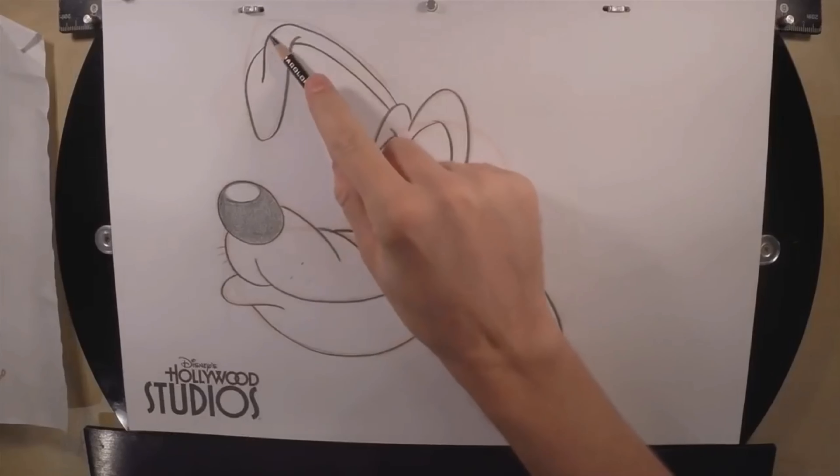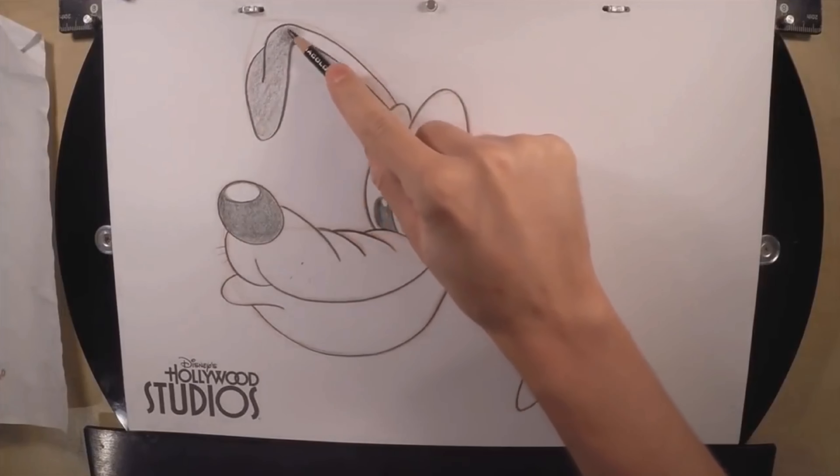Once you've got that, you can go ahead and shade in those ears as well. Remember, you're using the side of your pencil and shade really fast. You don't have to be too precise or accurate with it. It's a quick sketch.